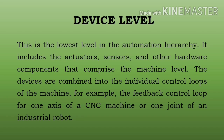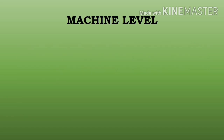The devices are combined into the individual control loops of the machine — for example, the feedback control loop for one axis of a CNC machine or one joint of an industrial robot. Closed loop control system means feedback control loop system mein output variable ko input parameter se compare karte hain. Industrial robot ek aisa robotic system hai jiska upyog manufacturing ke liye kiya jata hai; yeh automated aur programmable hota hai.